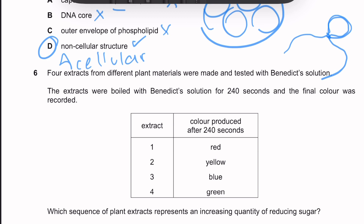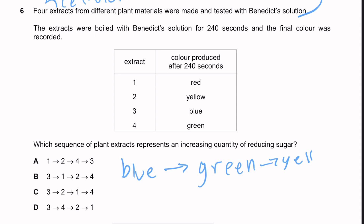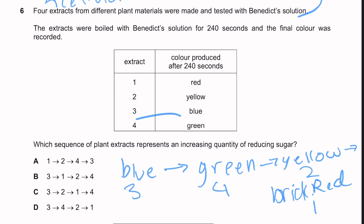Question six. Four extracts from different plant materials were tested with Benedict's solution, boiled for 240 seconds. Extract 1: red; 2: yellow; 3: blue; 4: green. Which sequence represents increasing quantity of reducing sugars? With Benedict's test, the colour changes progressively with increasing reducing sugar concentration: blue (no sugar) → green → yellow → orange → brick red (highest concentration). Think of it as blue + yellow = green in the middle. So increasing order is: 3 (blue), 4 (green), 2 (yellow), 1 (red) — which is option D.